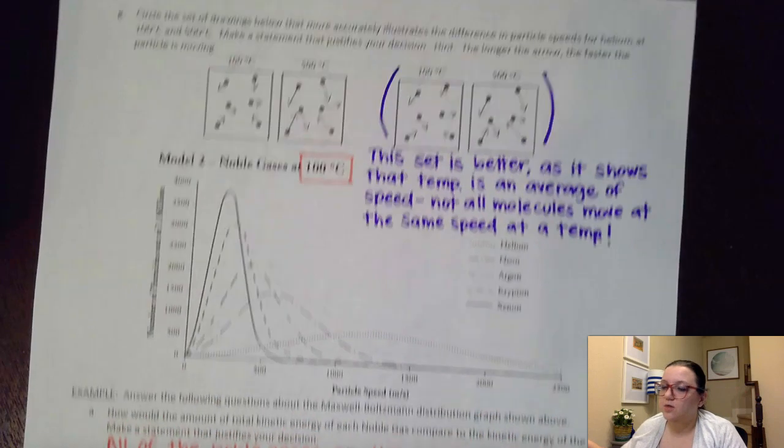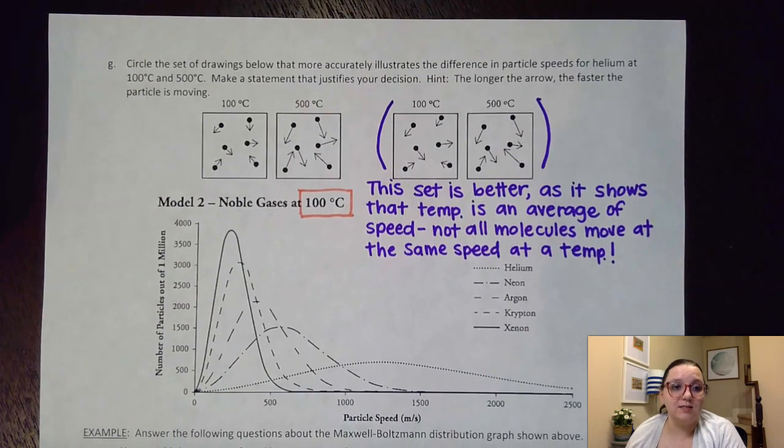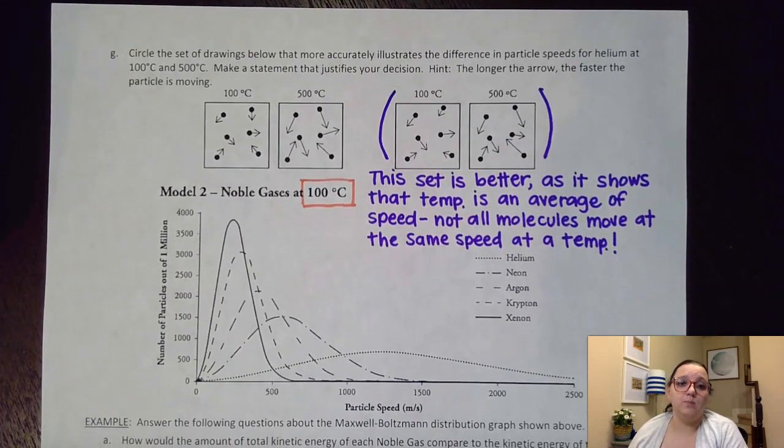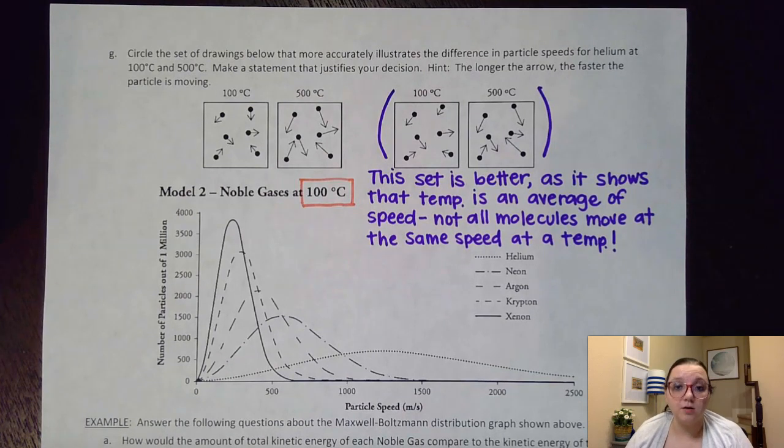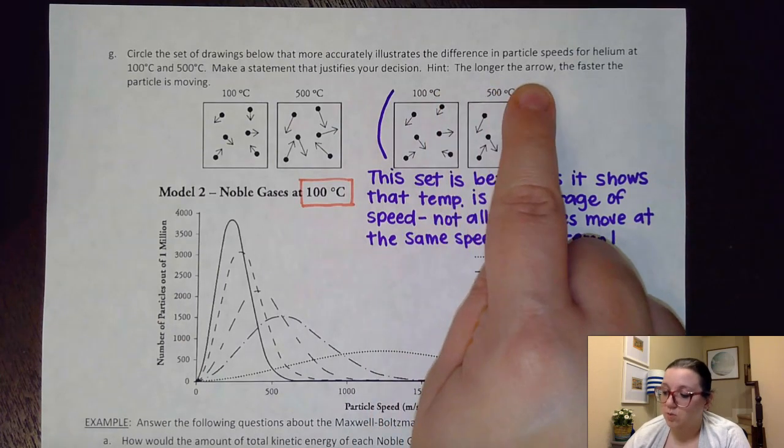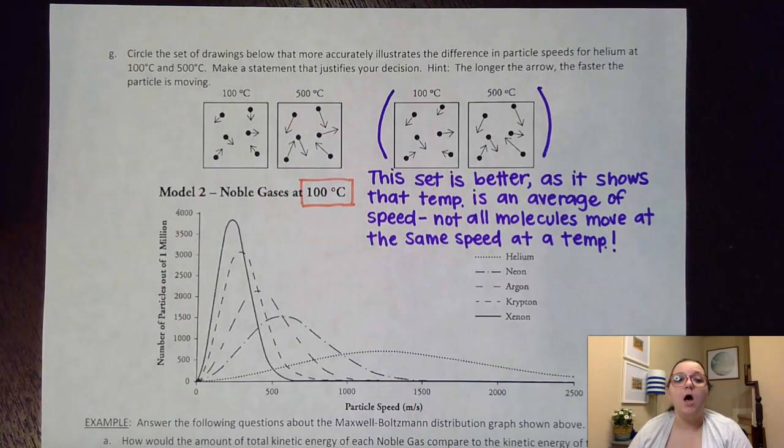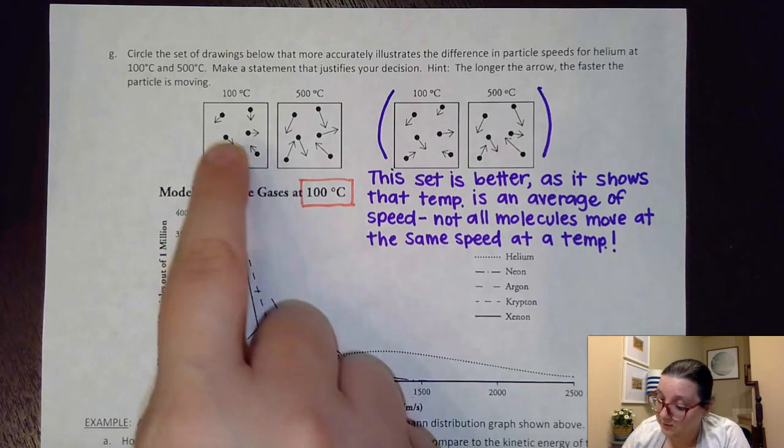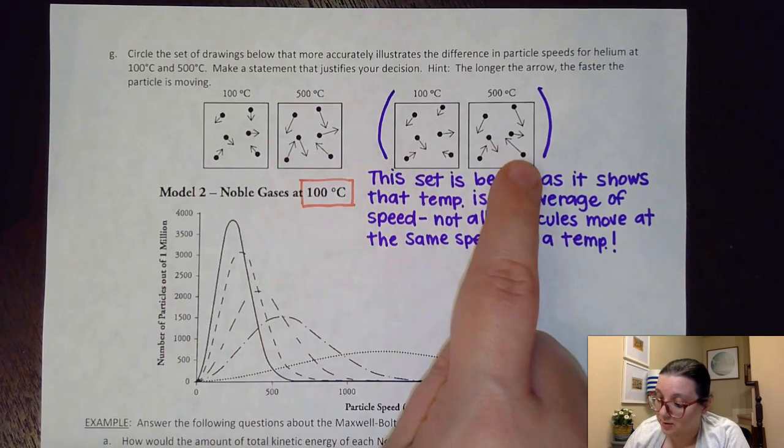Alright so to look at the question on the next page that ties to this it said circle the set of drawings below that more accurately illustrates the difference in particle speeds for helium at both 100 and 500 degrees Celsius. Well hopefully we know that at 500 degrees Celsius my particles should be moving faster than at 100 degrees Celsius. And they gave us a hint here that the longer the arrow the faster the particle is moving. So I should see longer arrows at 500 than I see at 100.